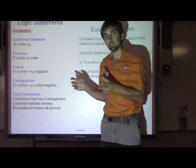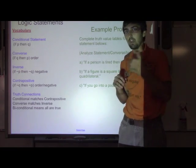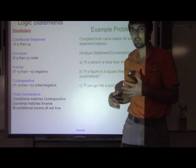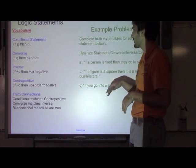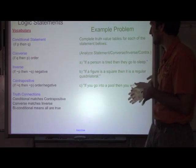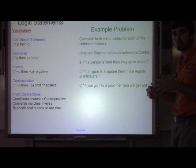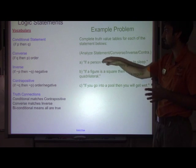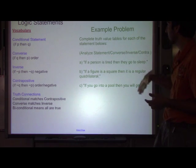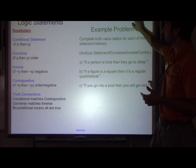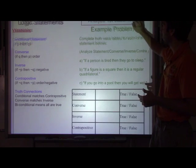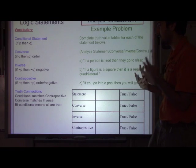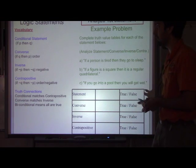If all four of them are true — so if it's the same forwards and backwards and everything — then it's called biconditional, and that happens when all are true. What we're going to do is look at three different statements and determine what's true and what's false in terms of the statement, the converse, the inverse, and so forth. I'm going to make a truth table — it's a good way to visualize what it's saying and whether it's true or false.